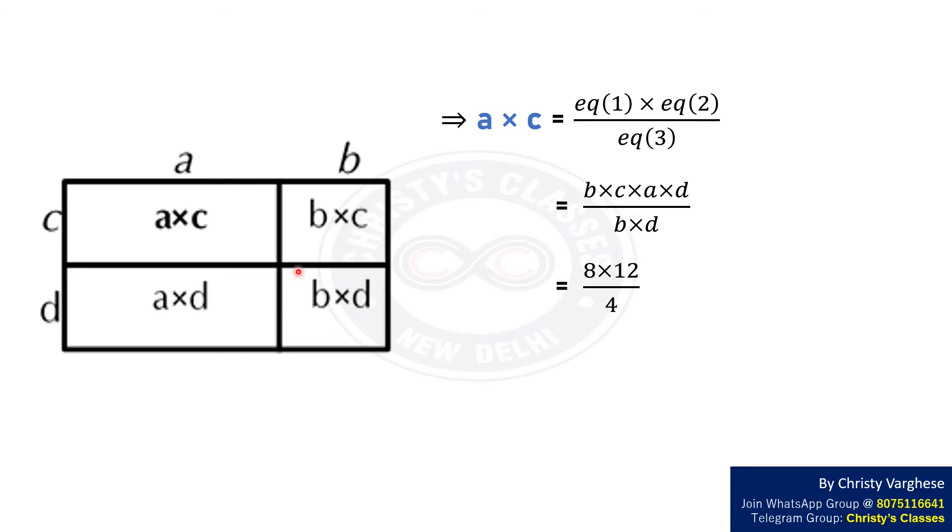This equals 8 into 12 by 4, which equals 24. That is, the missing area is 24.